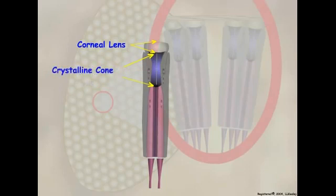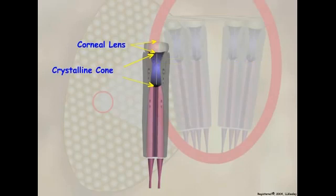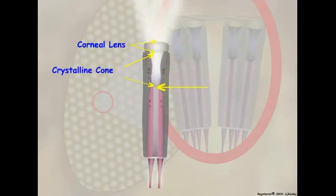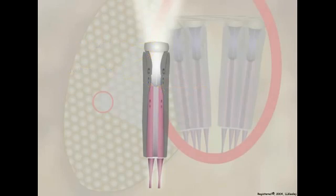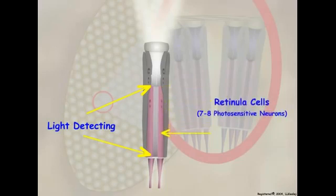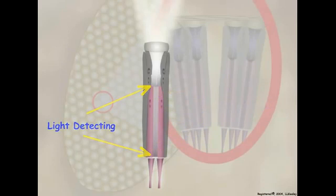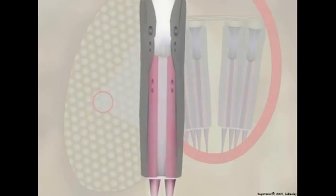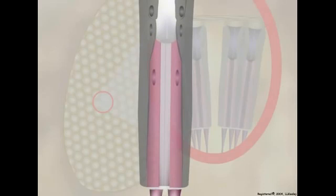The crystalline cone is either secreted or formed by four cells called Semper's cells. Light enters the corneal lens and is focused on the light-detecting apparatus by the crystalline cone. The light-detecting apparatus of each ommatidium contains seven to eight light-sensitive photoreceptor cells called retinula cells. Retinula cells are actually photoreceptor neurons that detect wavelengths of light. The light-sensitive dendritic region of the retinula cell is the rhabdomere.